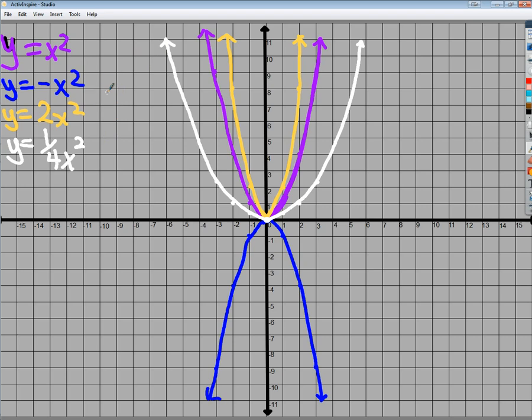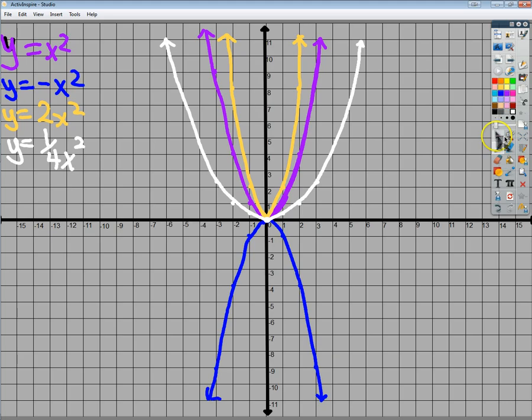With all these graphs, what you can notice is that the vertex is the same place. I haven't done anything to move my starting point for my graph. It's always been at the origin.